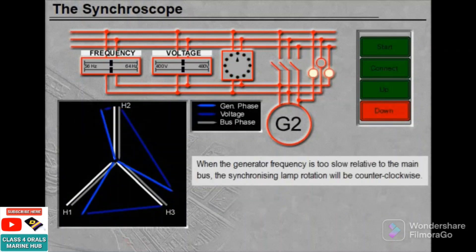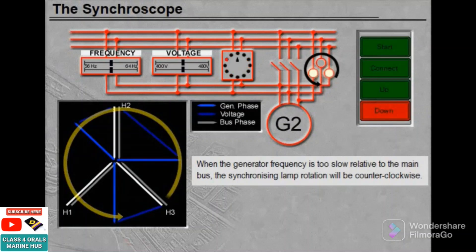When the generator frequency is too slow relative to the main bus, the synchronizing lamp rotation will be counter-clockwise.